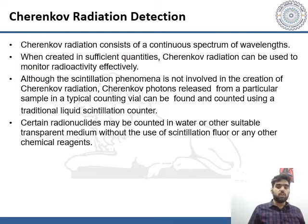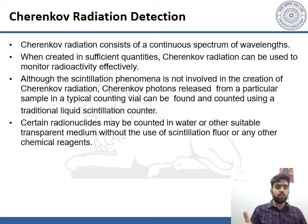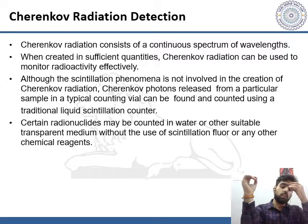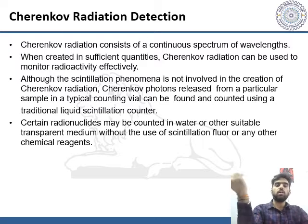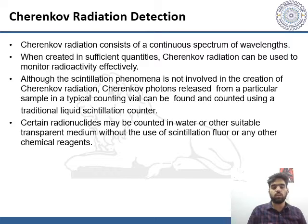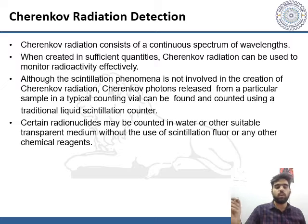Cherenkov radiation consists of a continuous spectrum of wavelengths. When created in sufficient quantity, Cherenkov radiation can be used to monitor radioactivity effectively. Bacher was able to detect Cherenkov radiation in terms of rates per microcurie. It can be detected from the UV range to the visible light range. Cherenkov photons released from a particular sample can be found and counted using a traditional liquid scintillation counter. Certain radionuclides may be counted in water or other suitable transparent medium without the use of scintillation fluor or any other chemical reagents.